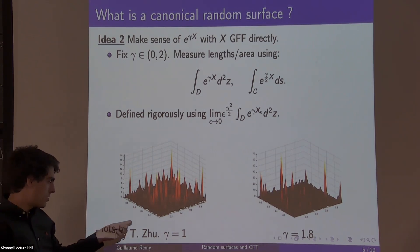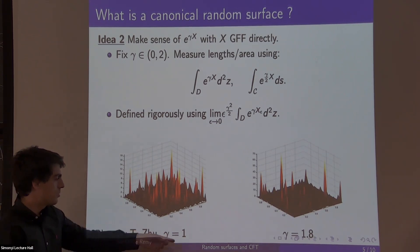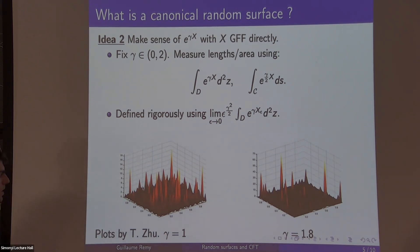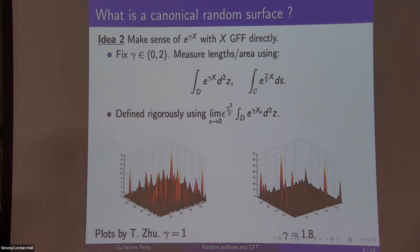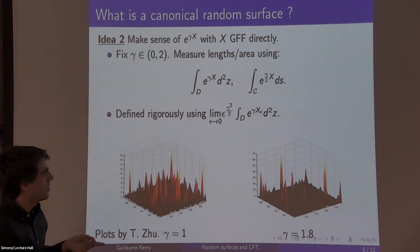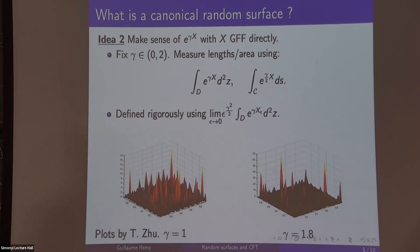The reason is that the Gaussian free field is not point-wise, it's a distribution. You need to make sense of this exponential through renormalization and regularization. If you go past gamma equals 2, you're in a different phase. You could do smoothing against a small ball, or truncate Fourier series. They all give the same limiting object.